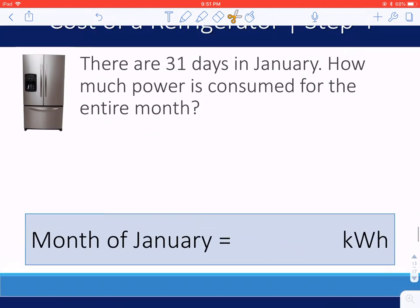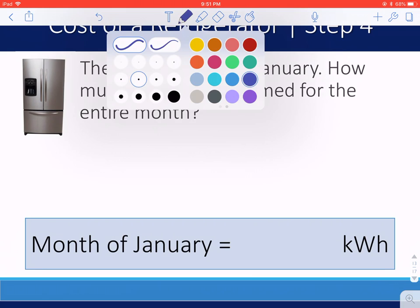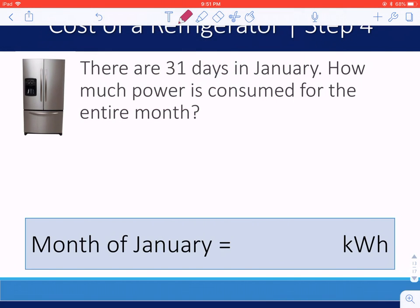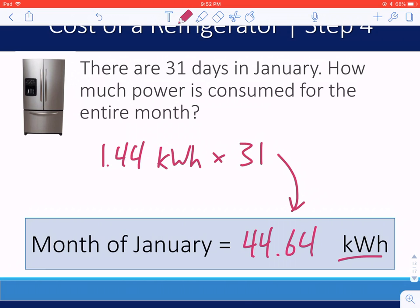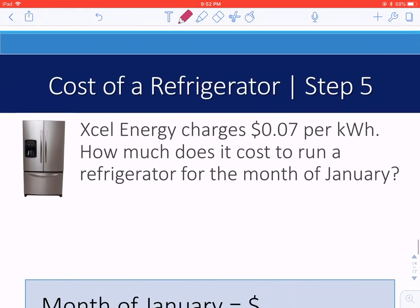A day is interesting, but a month is generally a little easier to think about the electricity for. So we're going to take that 1.44 kilowatt hours. We know that's per day, and multiply that by 31 days in the month of January. To find that the month of January requires 44.64 kilowatt hours of energy.